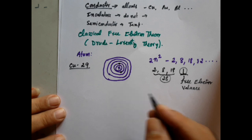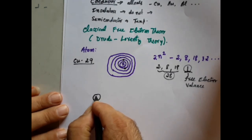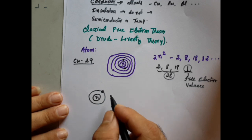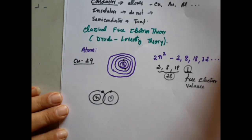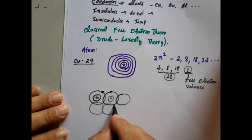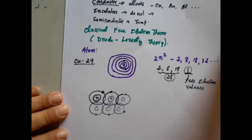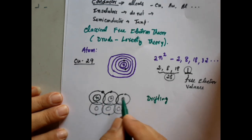What does Drude theory tell us about conductivity in metals? In Drude theory, consider a single atom with a nucleus and one free electron. If another atom is brought closer, the energy levels of the two atoms overlap, so the electron can easily travel from one atom to the other. When a large number of atoms are brought together, all energy levels overlap, and every atom's free electron is free to move from one corner to the other. This movement of electrons is called drifting.